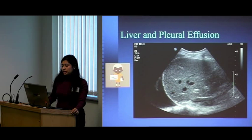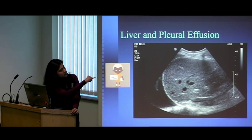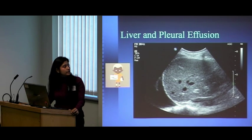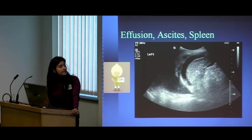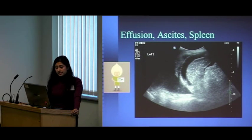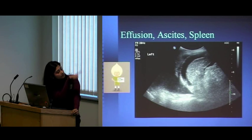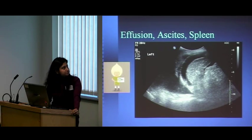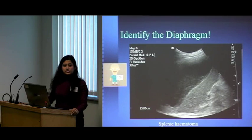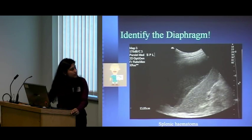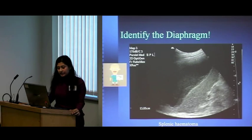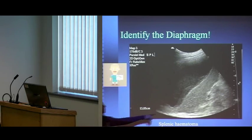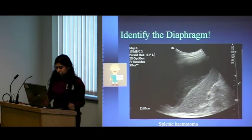Here are some examples of pathology. You can see the liver, the diaphragm at the bottom, and on the other side the pleural fluid, which is black or anechoic. One slide shows the difference between ascites and effusion — the spleen surrounded by dark ascites fluid, the diaphragm, and the pleural effusion on the other side. Another slide shows the importance of correctly identifying the diaphragm: what might be mistaken for the diaphragm is actually a splenic hematoma, where the darker part is a hematoma within the spleen.